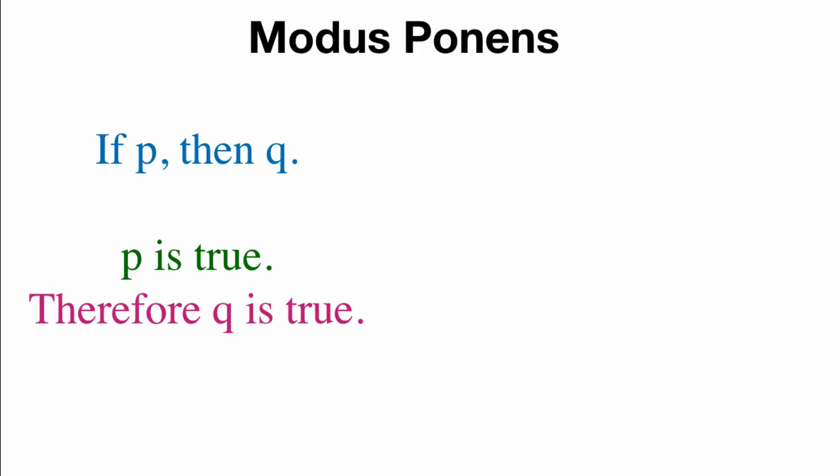So in logic, we have a structure called the modus ponens, and this is probably the most famous or the most common of all logical structures. We have a hypothesis, if P, then Q, which basically means that if P is true, it follows that Q is true. It's pretty straightforward.